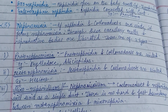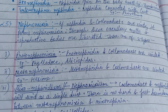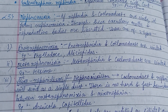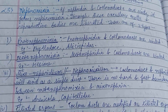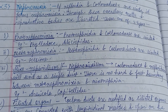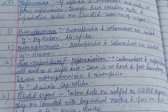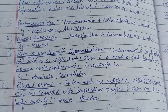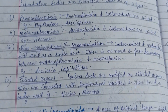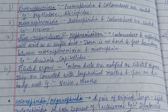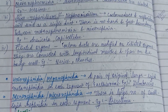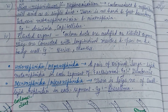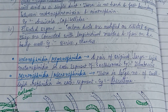Next is nephromyxia. If nephridia and the coelomoducts are united, it forms a nephromyxia. Through these, excretory matter and reproductive bodies are liberated. These are of three types: protonephromyxia, metanephromyxia, and myxonephridium, also known as nephromyxium.